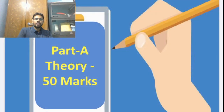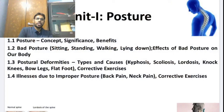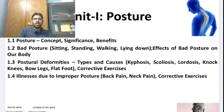Starting with the first part, which is theory for 50 marks. There are three units in the theory portion. The first unit covers posture — you will learn about the concept, significance, and benefits of posture. There are different types of bad posture in your body like sitting, standing, walking, or lying down, and what effects they have on your health and body.